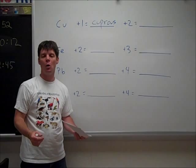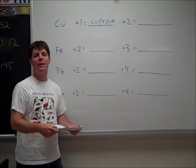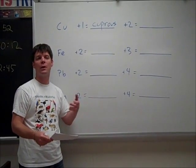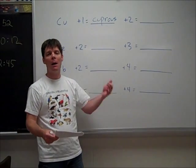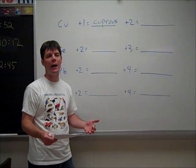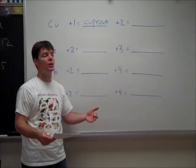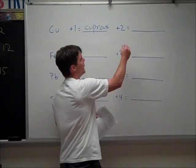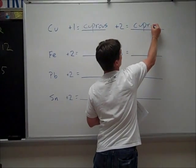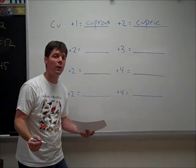So if I had copper one chloride, that's CuCl, the name for that in the Latin system would be cuprous chloride. Now, copper can also form a plus two ion. If we have copper two chloride, that would be CuCl2. The Latin name for that would be cupric chloride.